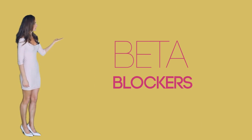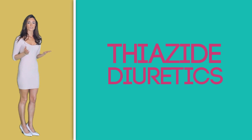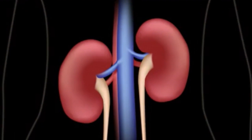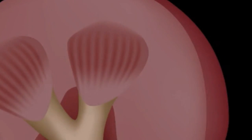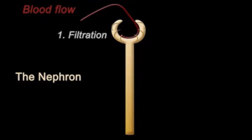Beta blockers are another effective medication. By opening the blood vessels and reducing the workload of the heart, these medications make the heartbeat slower with less force. By itself or with other antihypertensive drugs, it can produce better results. Thiazide diuretics, also known as water pills, work by acting on the kidneys to remove excess sodium and water from the body, which decreases the blood volume. It is one of the most recommended medications in managing hypertension.